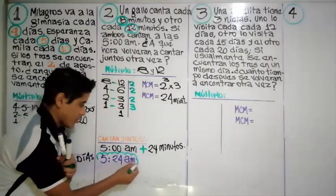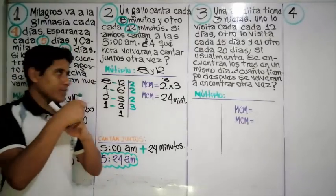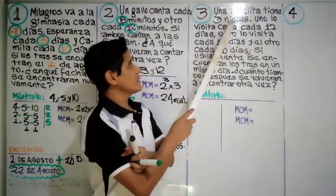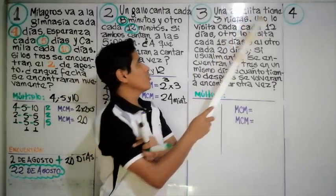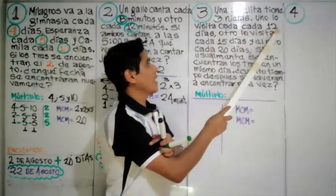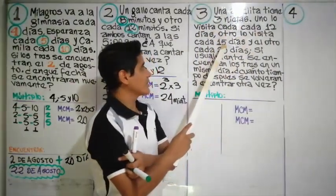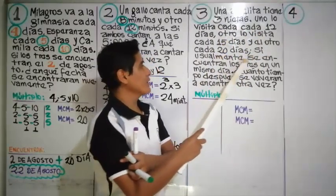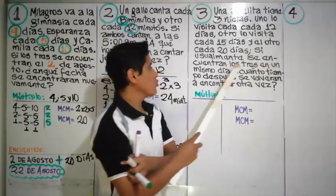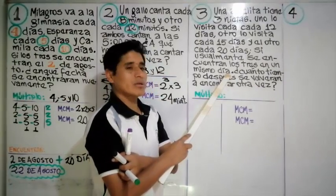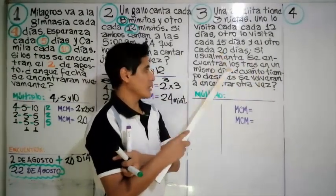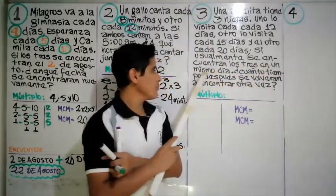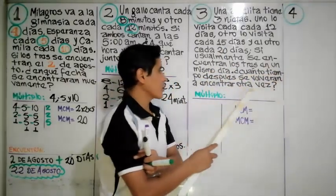Rápidamente, pregunta número tres: Una abuelita tiene tres nietos. Uno la visita cada doce días, otro cada quince días y el otro cada veinte días. Si usualmente se encuentran los tres en un mismo día, ¿cuánto tiempo después se volverán a encontrar otra vez?